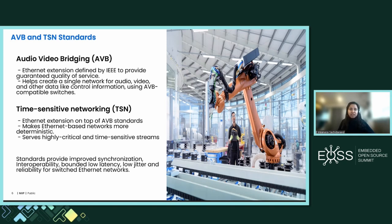TSN stands for Time Sensitive Networking. It's also an Ethernet extension defined by IEEE on top of the AVB standard, and it helps make Ethernet-based networks more deterministic. It helps serve highly critical and time-sensitive networks. One of the biggest advantages of using these Ethernet extension standards is that it helps reduce cable complexity and you can reuse existing Ethernet networks. These standards provide improved synchronization, interoperability over existing Ethernet networks, and help reduce bounded low latency, provide low jitter, and increased reliability for switched Ethernet networks.